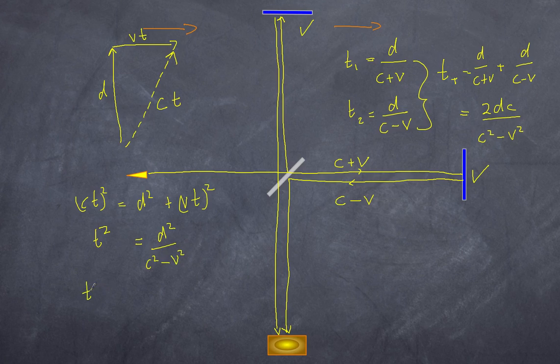And so what we end up getting is T squared is equal to D squared over C squared minus V squared. That means the time up will equal D over the square root of C squared minus V squared. That means the total time that is going up and back. And if it goes back, the triangle is going to be similar, but it's going to go in the other way. You're going to get a value of 2D over the square root of C squared minus V squared.